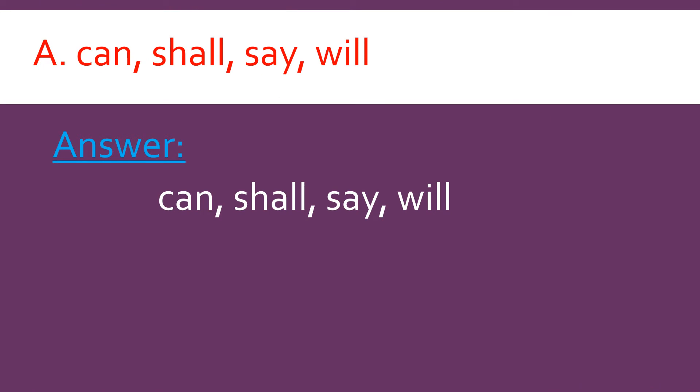First question: can, shall, say, will. Here you need to circle which is not a helping verb. Is can a helping verb? No, it is a helping verb. Shall, yes, it is also a helping verb. What about say? Say is not a helping verb, but will is a helping verb. So which word do we need to circle? Very good, say only. We need to circle the word say.